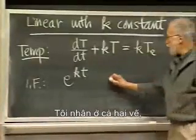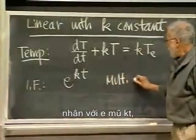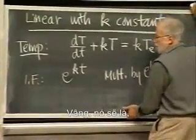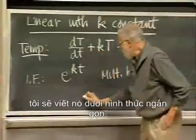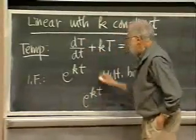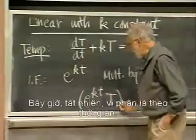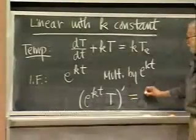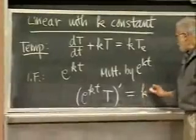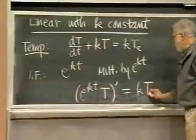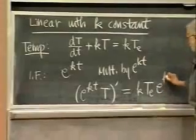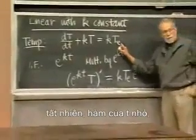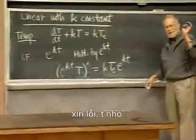I multiply through both sides by e to the kt, and what's the resulting equation? I'll write it in the compact form. It's going to be e to the kt times T, all prime — the differentiation is with respect to time. And that's equal to kT_e, whatever that is, times e to the kt. This is a function of little t, of course.